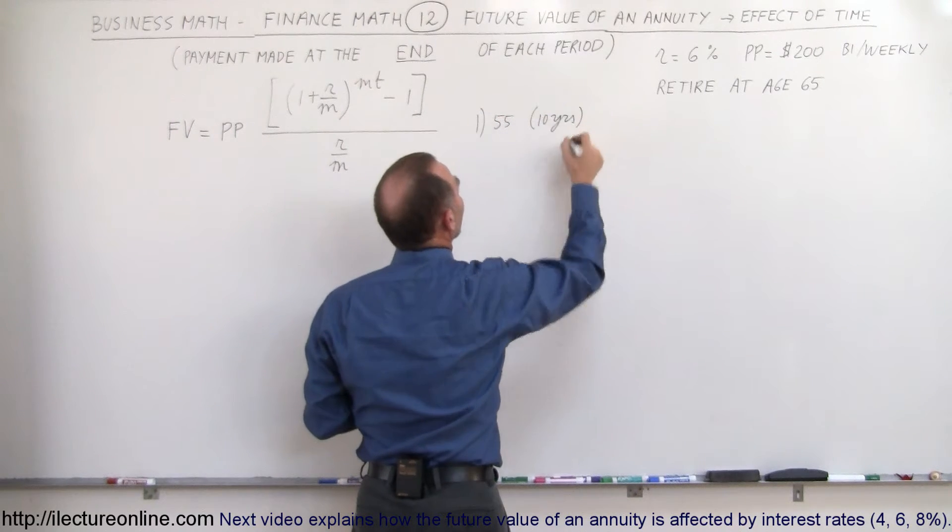Four scenarios. The first scenario, the person decides at age 55 so that would be 10 years left and the person decides I better start putting some money away for my retirement. Let's say that the person is a little smarter and starts at age 45 which means the person has 20 years left before retirement. The third scenario, let's say the person starts at age 35 and therefore has 30 years of savings. And then scenario four, the person begins at age 25 and therefore has 40 years to save money into an annuity. Who's the smartest of the four? Well, it depends who wants the most money when they retire. And the earlier start, the better it is.